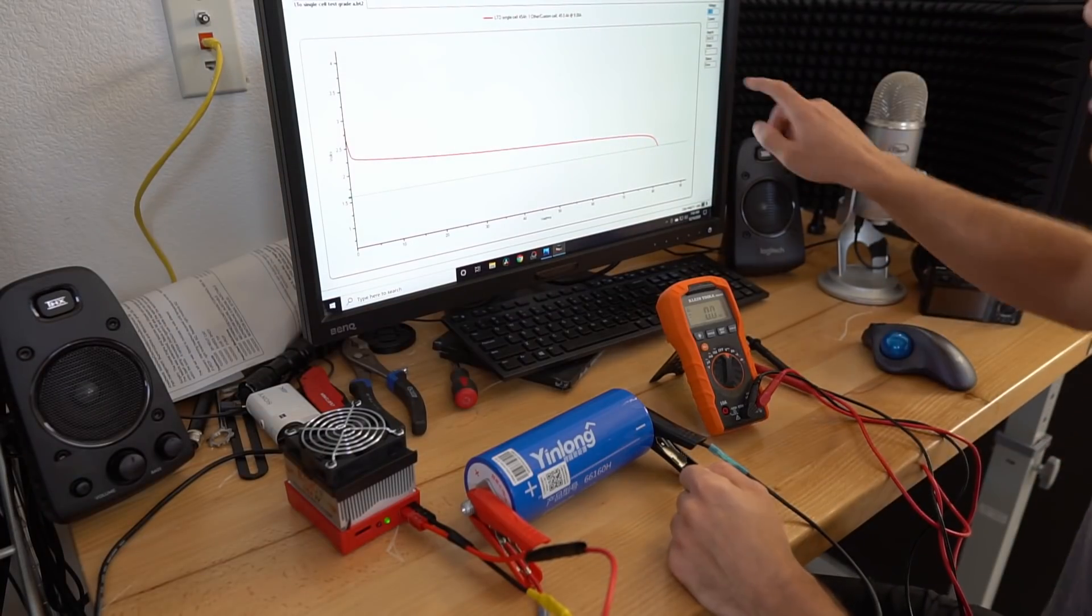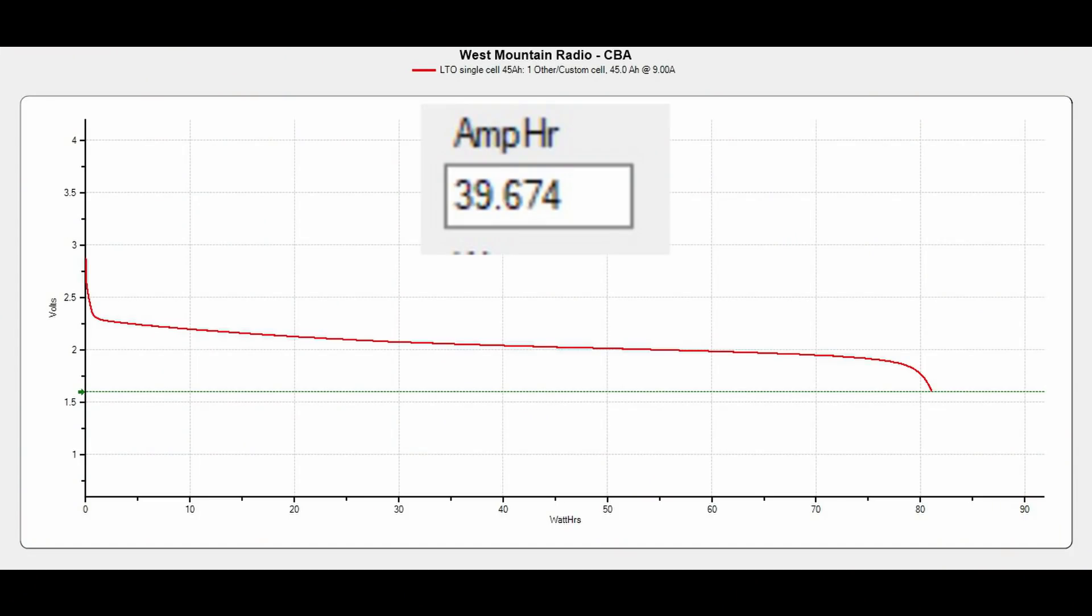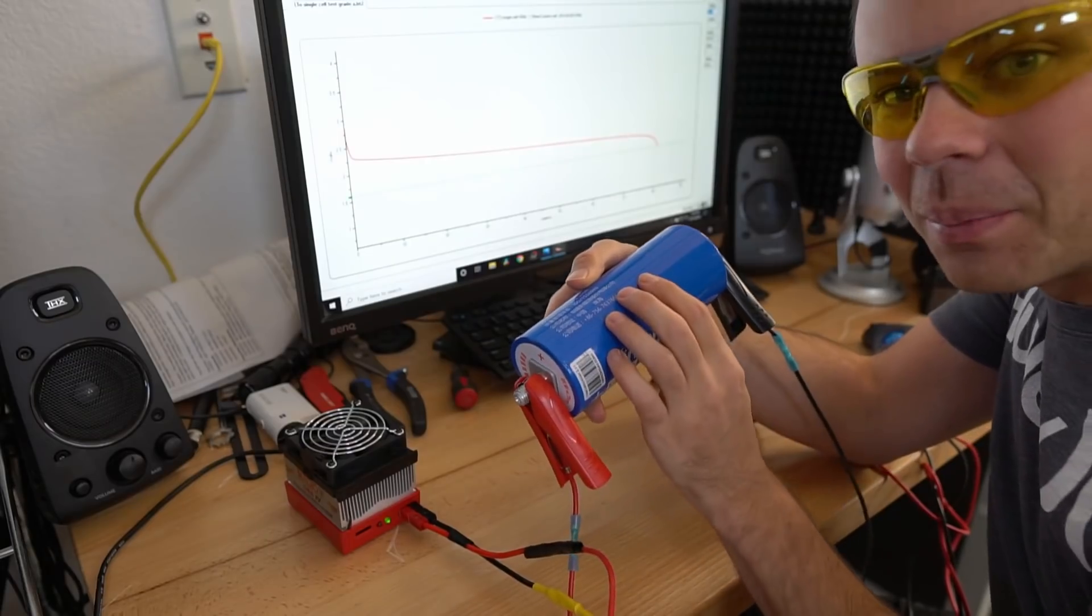Uh-oh. We only pulled 39 amp hours. So these test results are consistent. These are not 45 amp hour cells. Man, what a bummer.